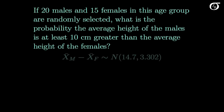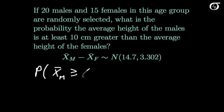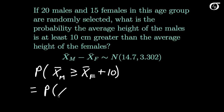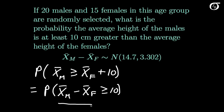Suppose we have the same scenario, except now we want to know the probability that the average height of males is at least 10 centimeters greater than the average height of females. We want the probability that X bar m is greater than or equal to X bar f plus 10. Subtracting X bar f from both sides, this equals the probability that X bar m minus X bar f is greater than or equal to 10. Getting X bar m and X bar f together like this lets us use the known sampling distribution of that quantity, and we can standardize to find the probability using the normal distribution.